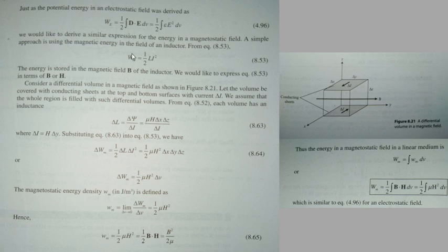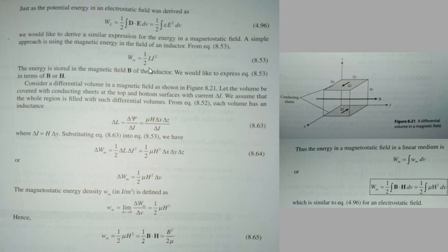In the case of this, we will consider a differential volume — you can see a differential volume with length, breadth, and height delta x, delta y, delta z. We will denote the current as delta i. We will actually start with the expression w equal to half L I square and substitute the differential elements. In the case of L, we will discuss the differential inductance, which is delta L.